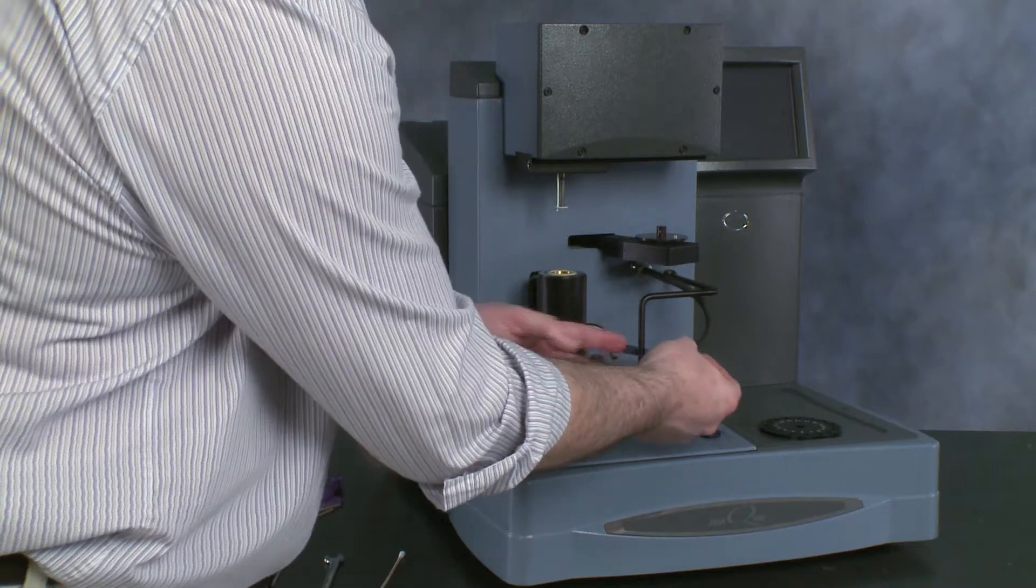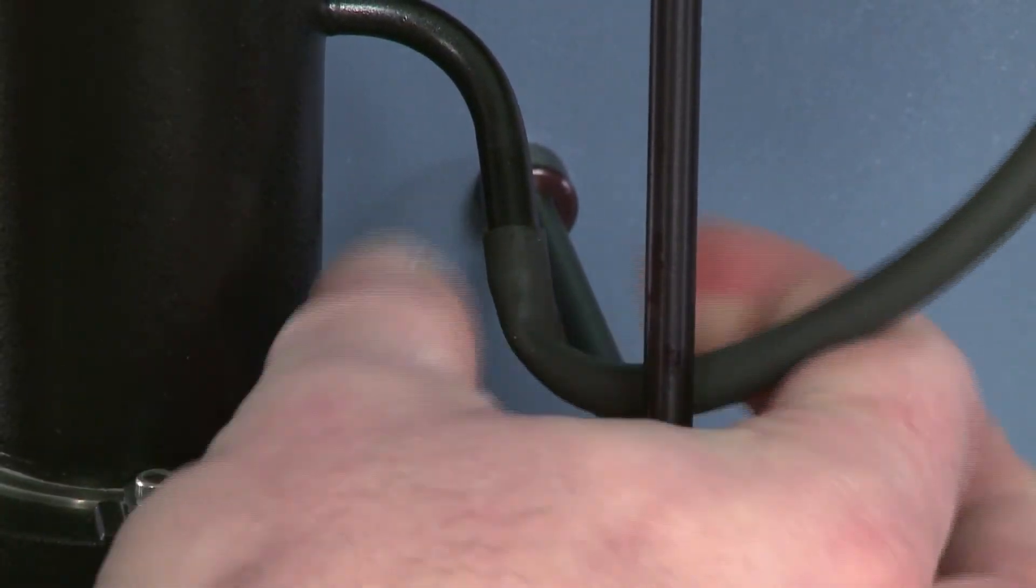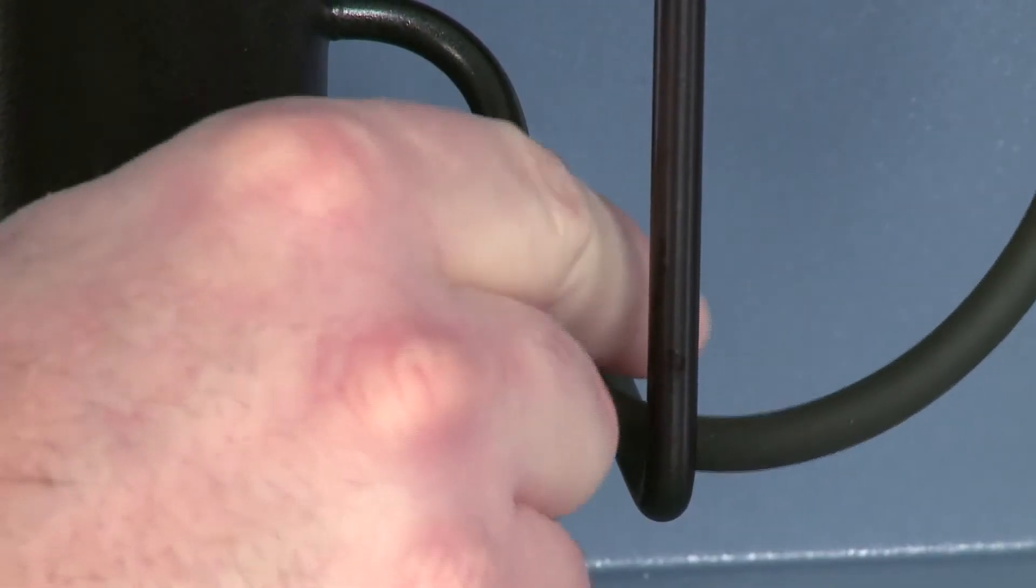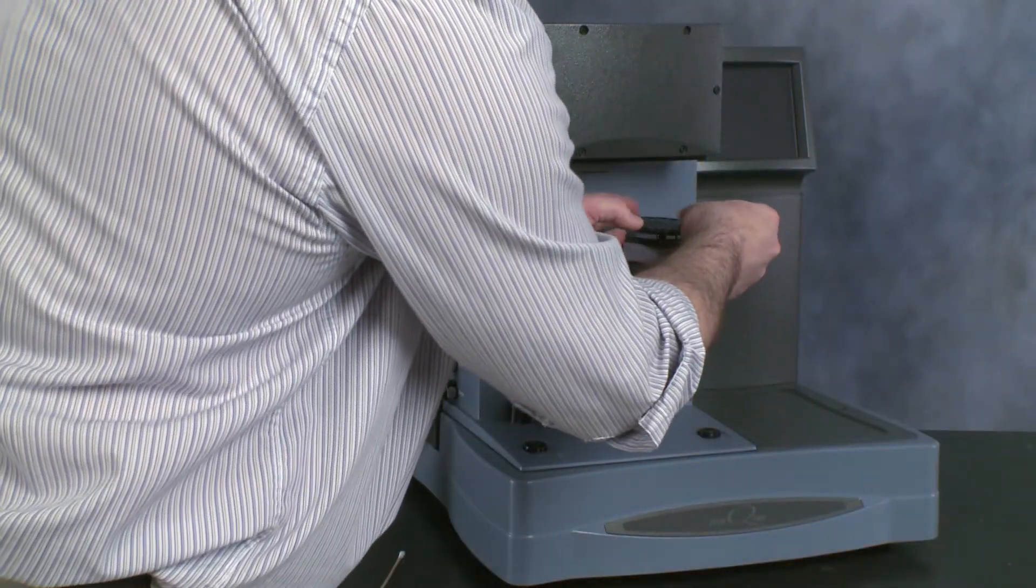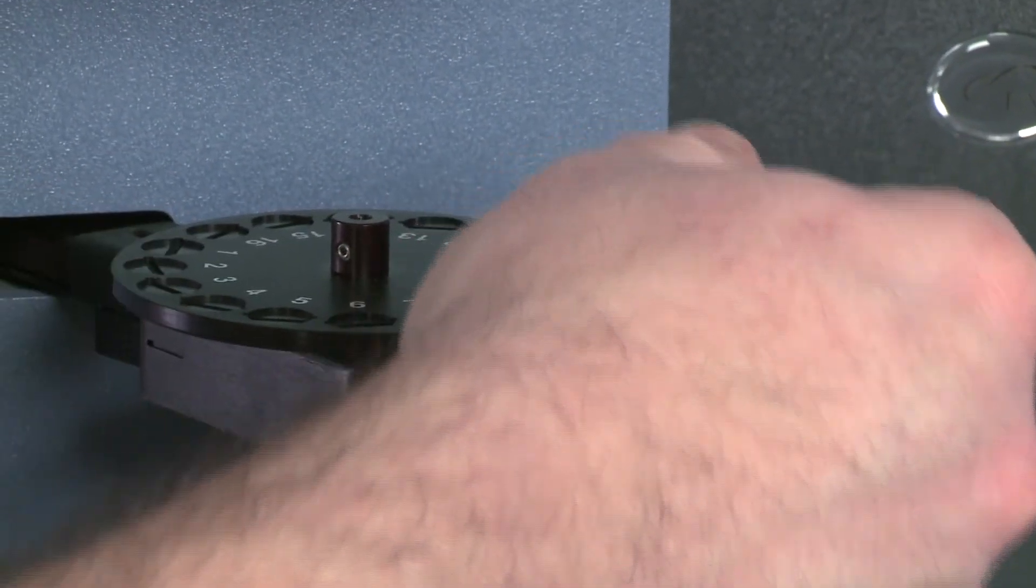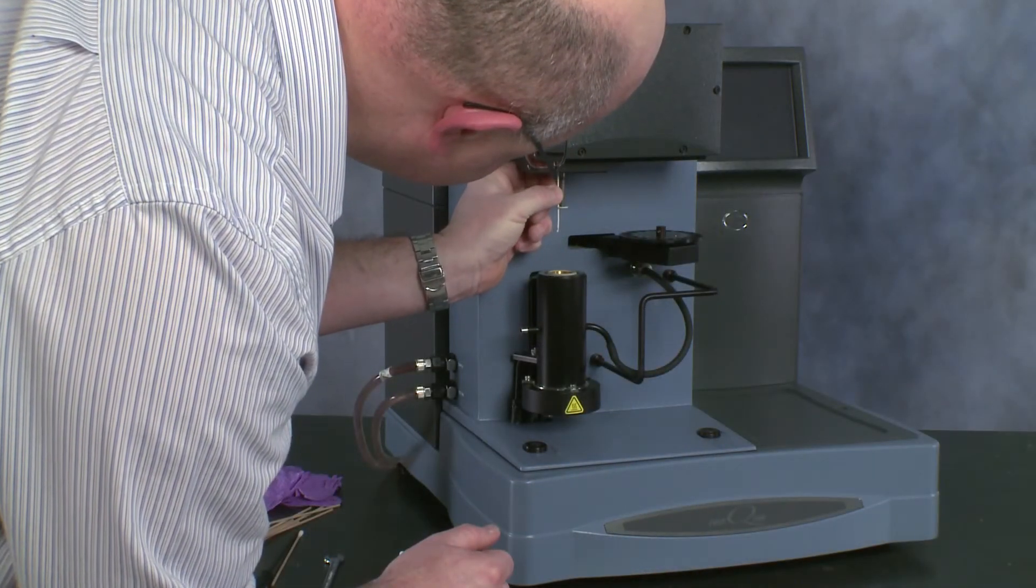We can replace the purge gas tube, making sure to bring it on the inside of the protection so it doesn't get caught. Replace our auto-sampler tray and then lower the thermocouple back into position.